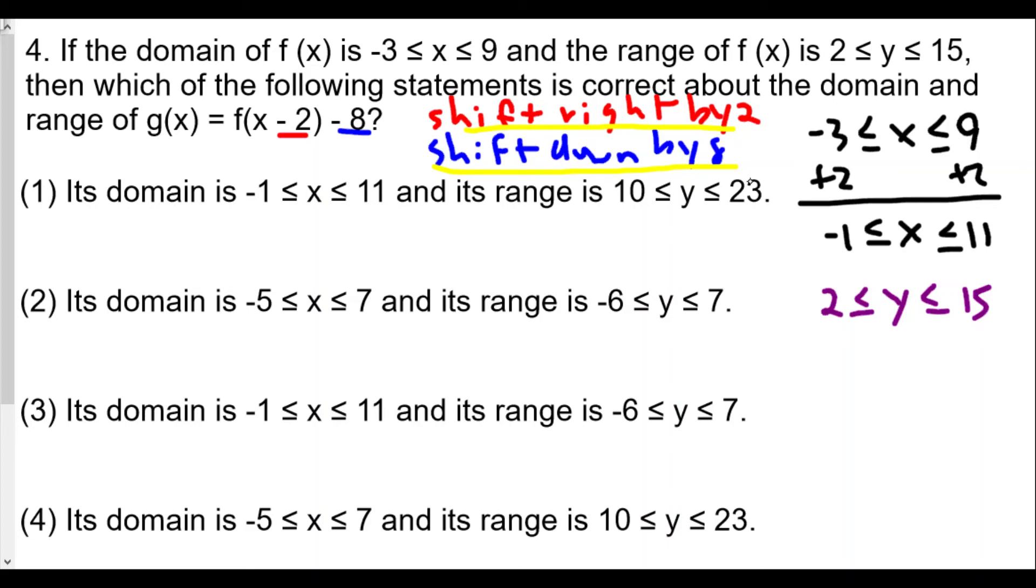Shift down by 8 means we'll subtract 8 from the y values, so we do minus 8 and minus 8. We get -6 ≤ y ≤ 7.